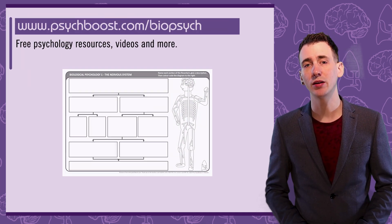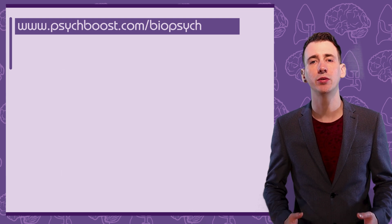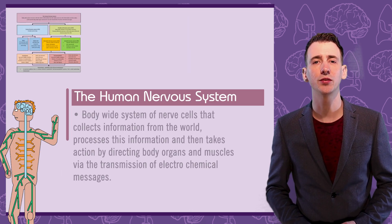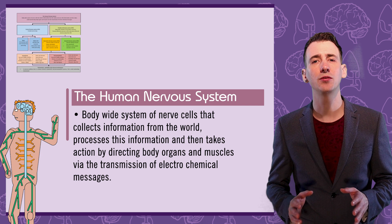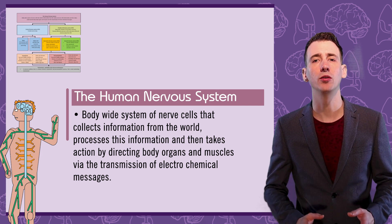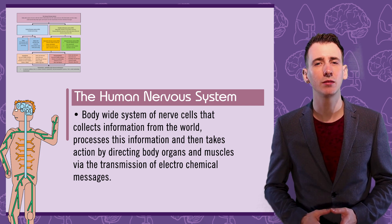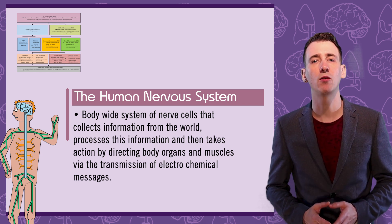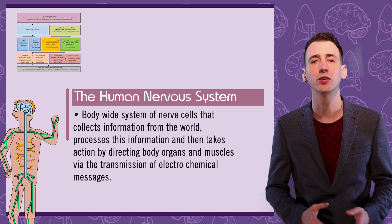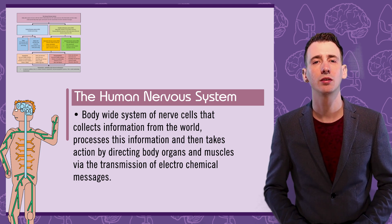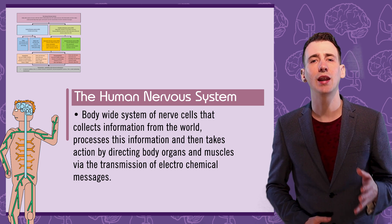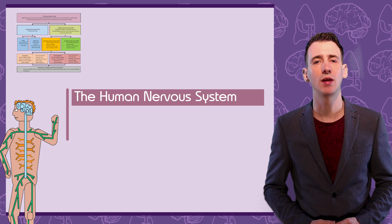So let's start by just saying what the human nervous system is. It's a body-wide system of nerve cells that collects information from the world, processes this information, and then it takes action by directing bodily organs and muscles. And it does this by transmitting electrochemical messages.